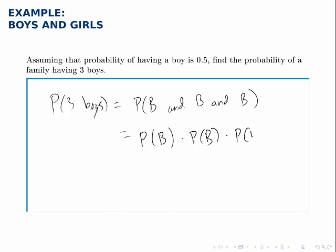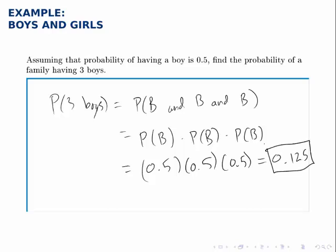Since the probability of having a boy each time is 0.5, we can multiply together 0.5 three times, and what we get is 0.125. That's about a 12% chance that this family will have three boys all in a row.